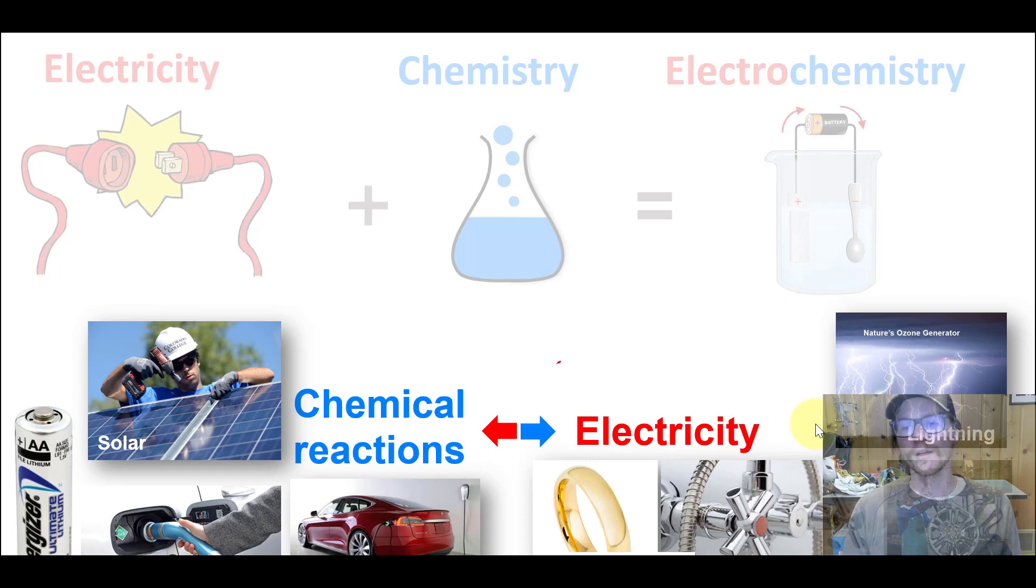Another really common place where you see this direction of electricity to chemical reactions is in the industrial production of a lot of commodity chemicals. So things like chlorine or sodium or sodium hydroxide, all of those are done in large-scale electrochemical reactors.